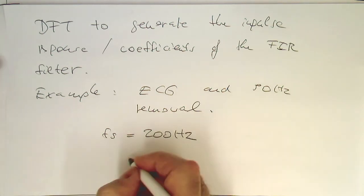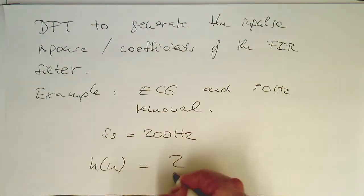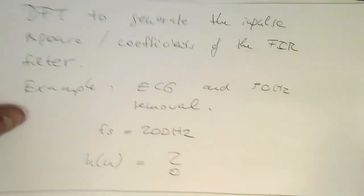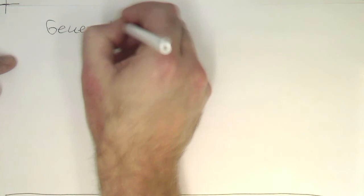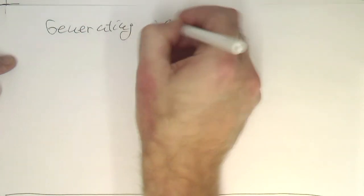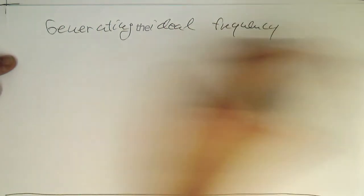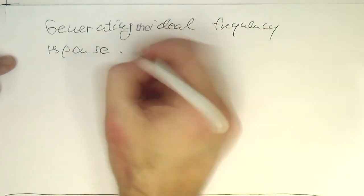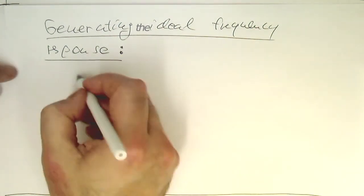So how do we get the H in this case here? So that's pretty straightforward. So what we do as before, we are generating our ideal frequency response. But in this case, we have our DFT coefficients here.